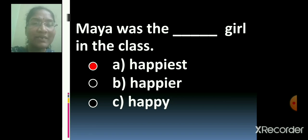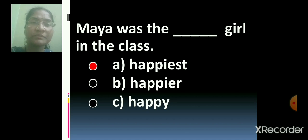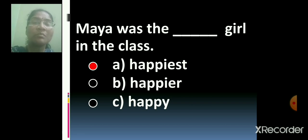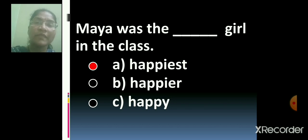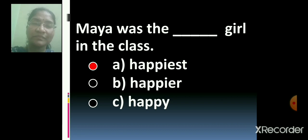Maya was the happiest girl in the class. Now repeat after me. Maya was the happiest girl in the class. Maya was the happiest girl in the class. Good.